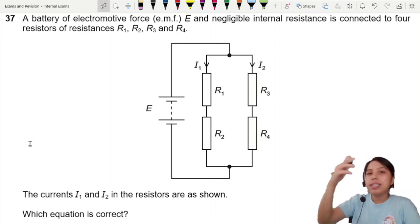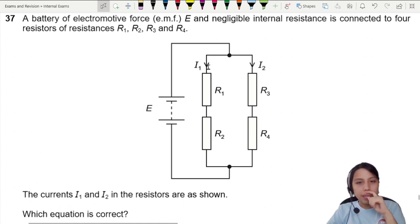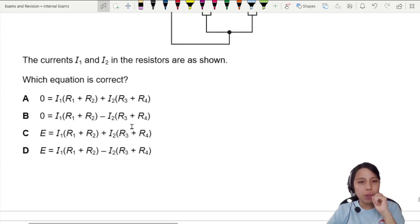A battery of electromotive force and negligible internal resistance. Very good. The internal resistance makes things complicated. Set up in this circuit, the currents are shown as I1 and I2. Current comes here and splits. Which equation is correct? We need to find the equation.